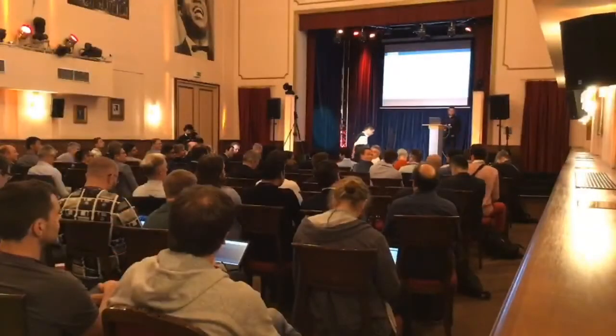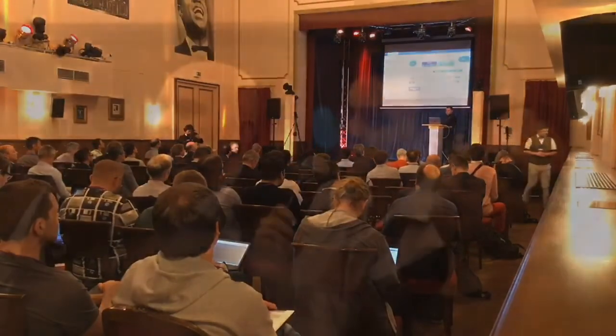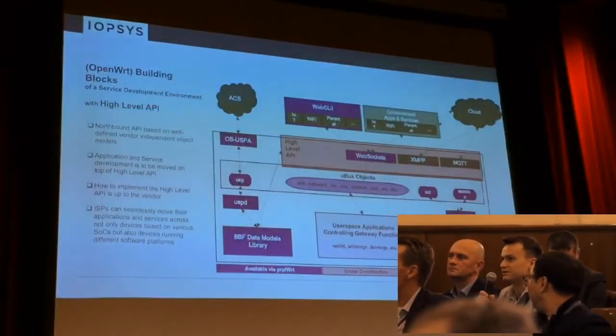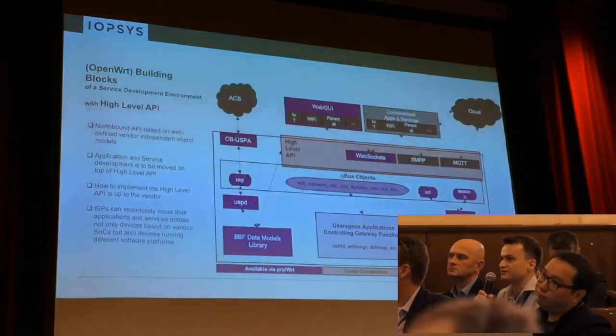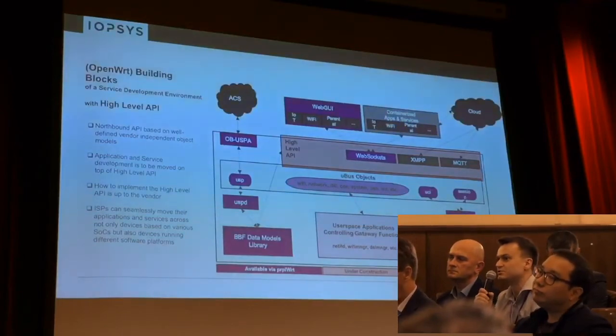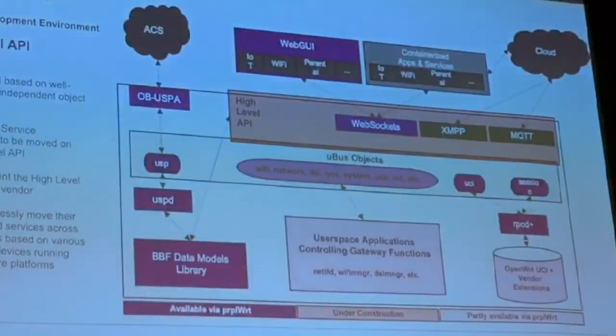A question from the audience: if I understand correctly, you are mapping the high-level API to UCI — so there's an adapter from the high-level API to UCI. And going through the data model presented by the Broadband Forum, you map the data model to the high-level API, which is then mapped to UCI. Why was this direction chosen? The broadband data model TR-181 seems more fitting for presenting the router's parameters, while the high-level API is more like objects for external use — so isn't it more reasonable to map the high-level API to the data model instead?